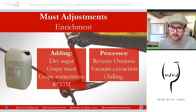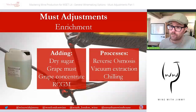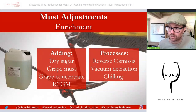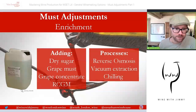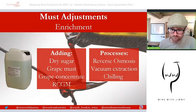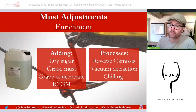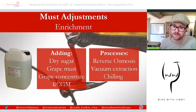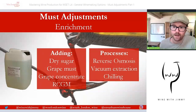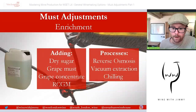Those practices include the addition of dry sugar, the addition of grape must or grape concentrate, and more commonly Rectified Concentrated Grape Must — RCGM — which is an industry-manufactured, flavorless, odorless syrup from grapes. You can see on the left a 20-liter bottle of RCGM, which is used to bump up the must. Enrichment also includes concentration processes such as reverse osmosis, vacuum extraction, and cryo extraction — chilling down the product.